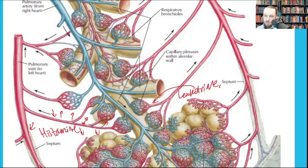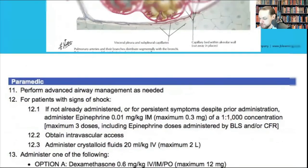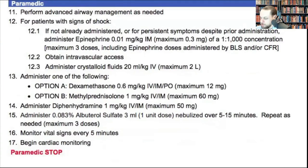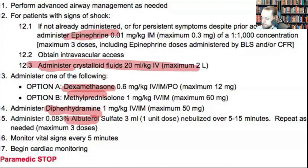From the remote protocol for type 1 hypersensitivity reaction, you see steroids, epinephrine, antihistamines, albuterol, and IV fluids for hypotension. You can also give pressors to bring blood pressure up. Look at your medications in terms of route of action — correlate normal physiology with pathological condition and how medications exert their effects.